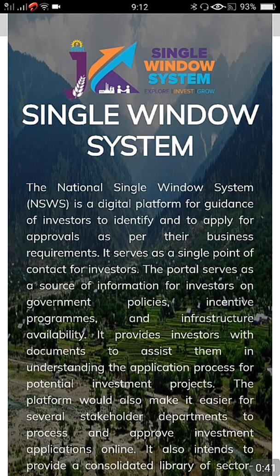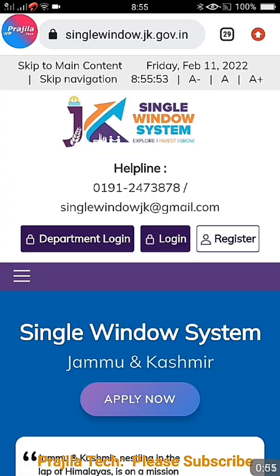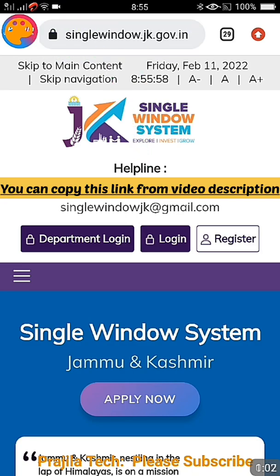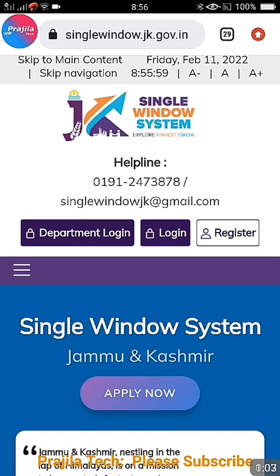I'll show you how to register so that you can keep a username and password, and later, when they push the facilities one by one, you can apply through this single window system. We are now in the portal — as you can see on the screen, the URL is singlewindow.jk.gov.in. I will give this link in the video description so you can copy and paste it.